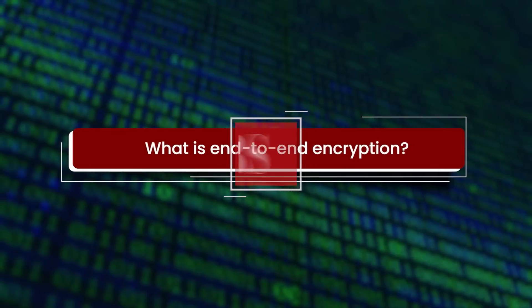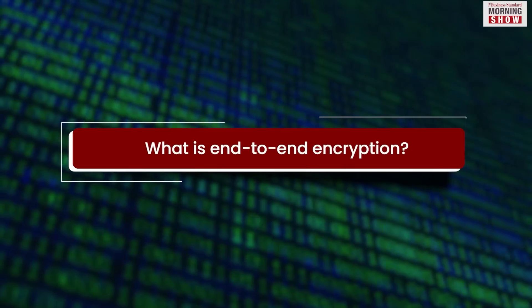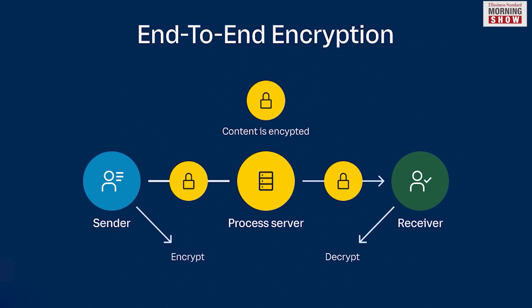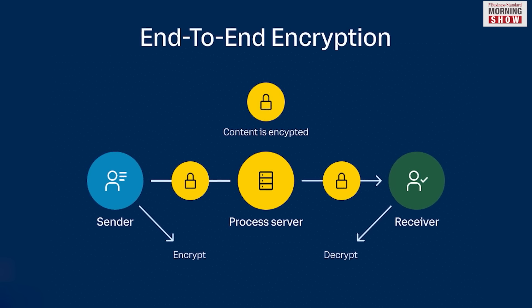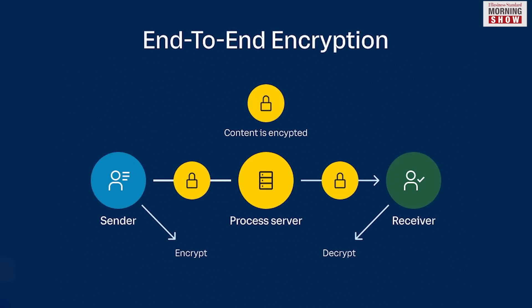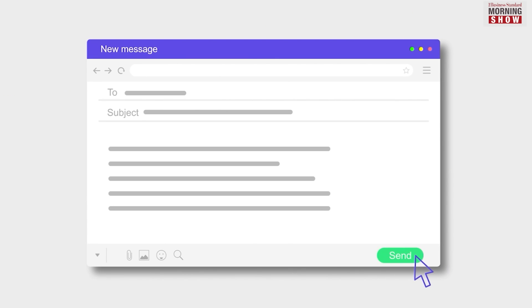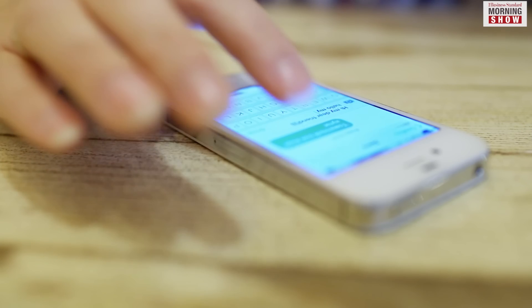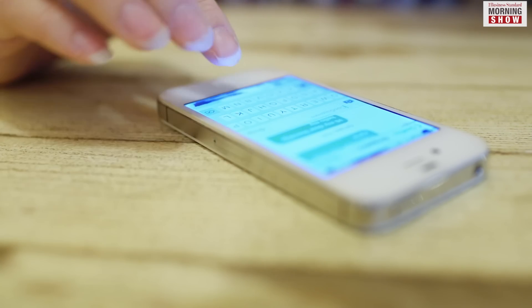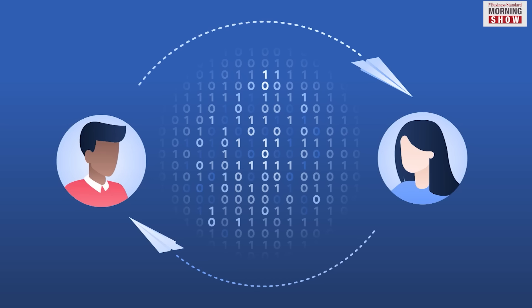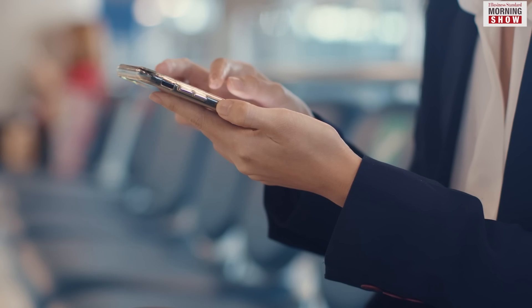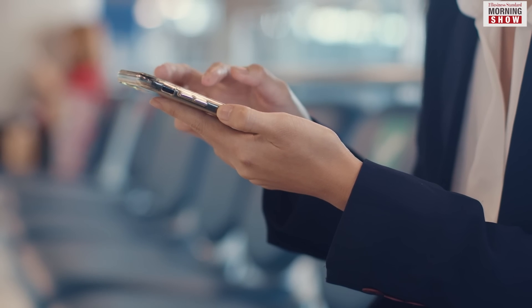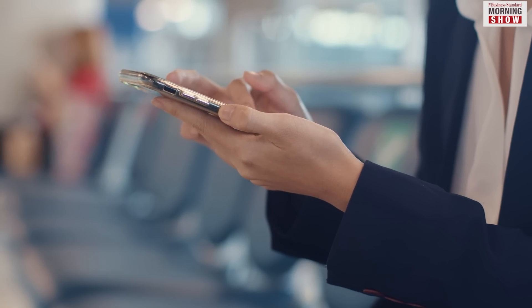End-to-end encryption or E2EE is a type of encryption where a message is encrypted at the sender's end and decrypted on the receiver's end. The message remains encrypted at all points during transit, so even if someone intercepts it during transmission, they cannot read its contents. The encryption and decryption of the message happen only at the endpoints — the sender and the receiver end. The message is not encrypted or decrypted at any point in transit.